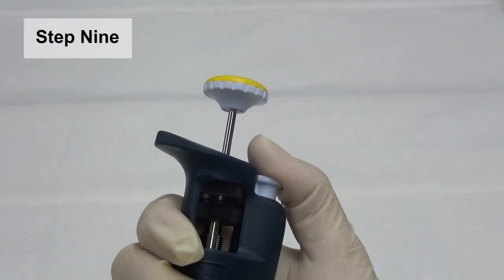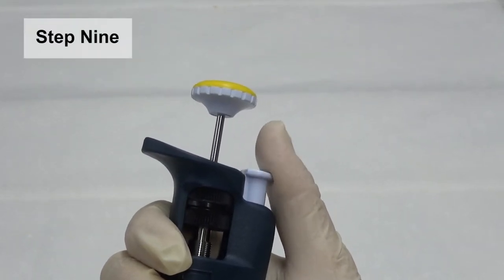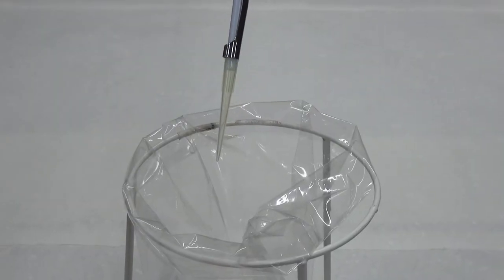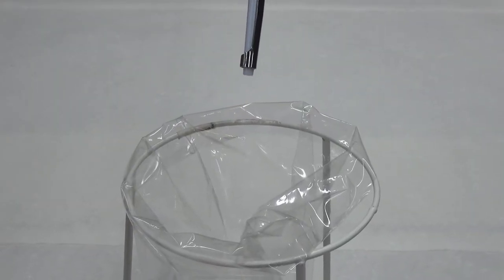Step 9: Press the tip ejector button while aiming at the trash bin for used tips to eject and discard the tip.